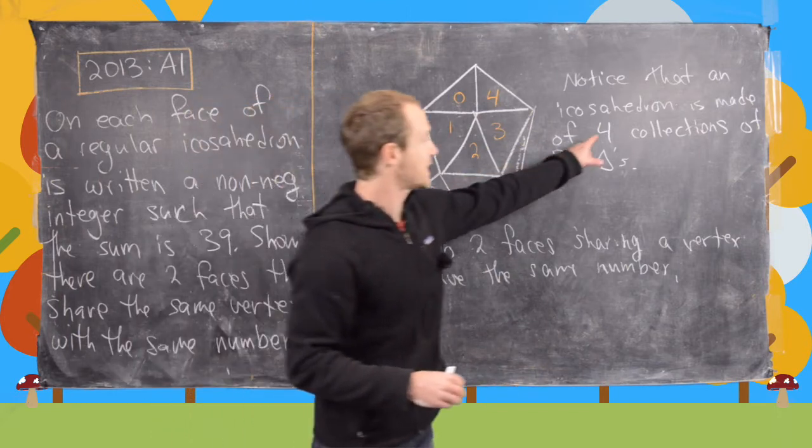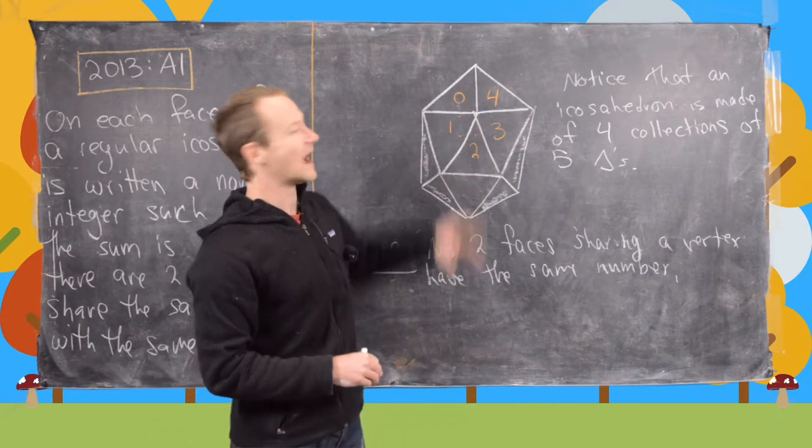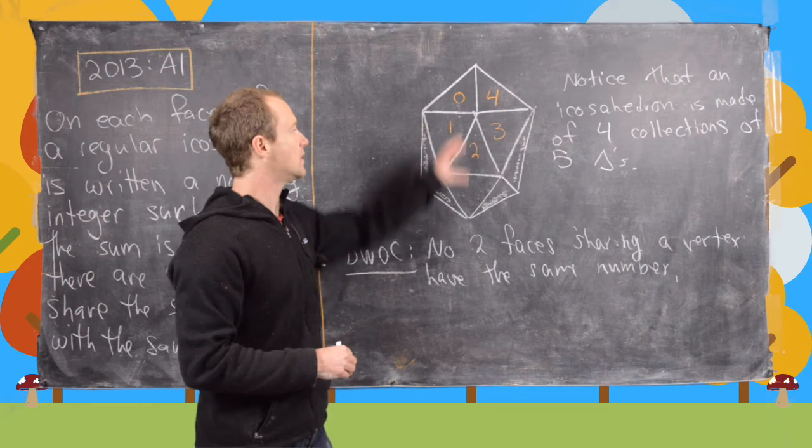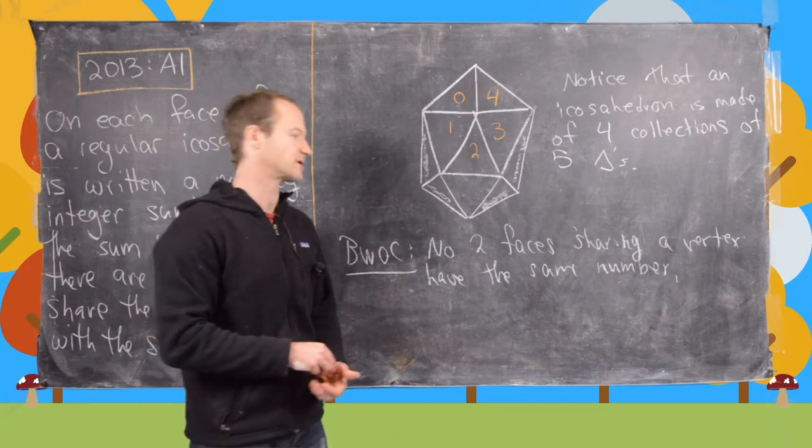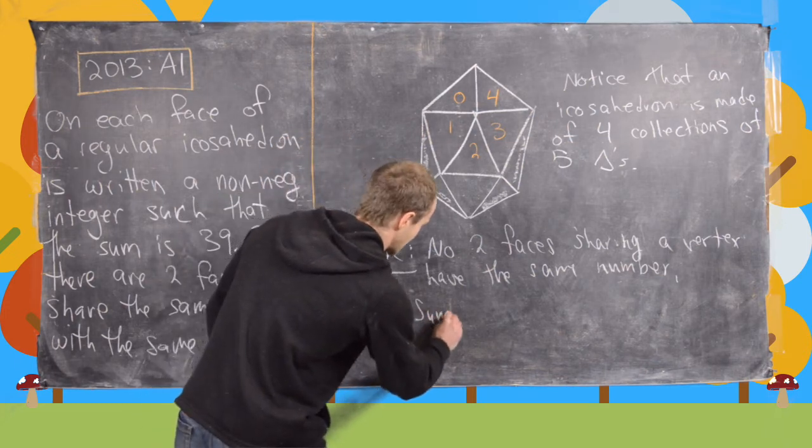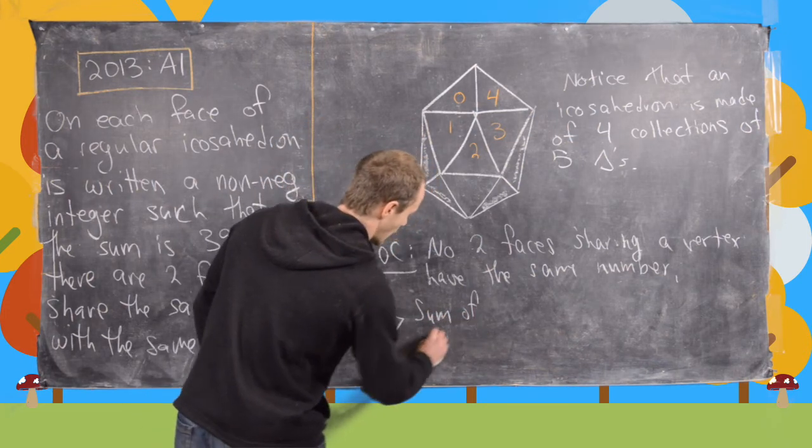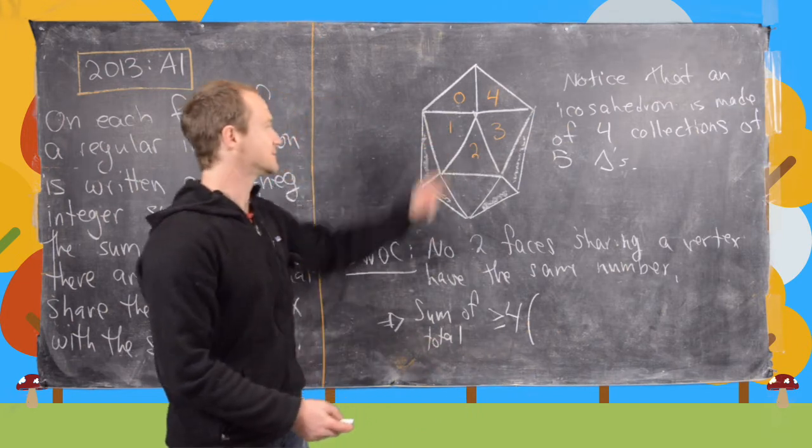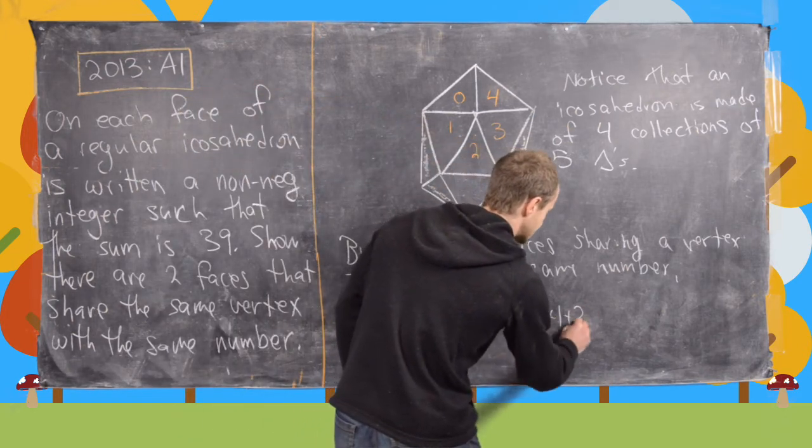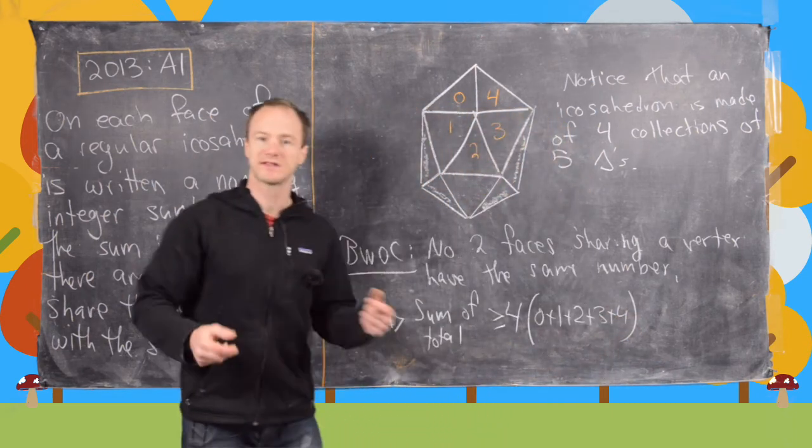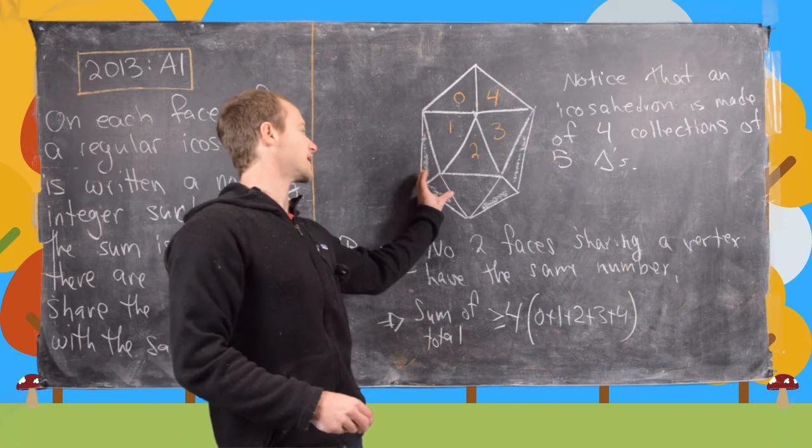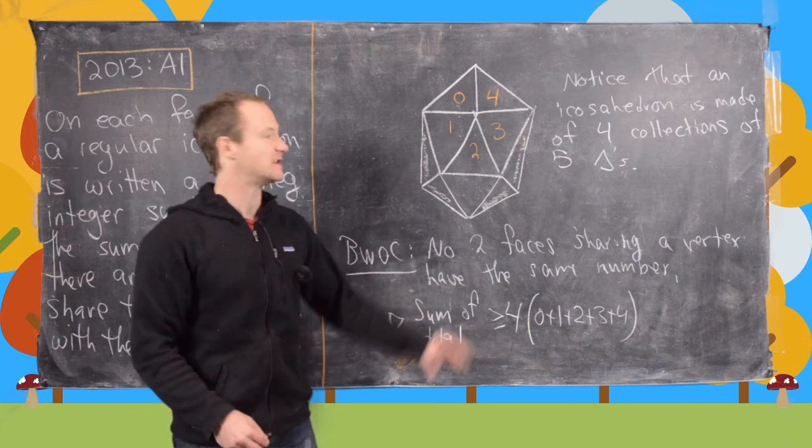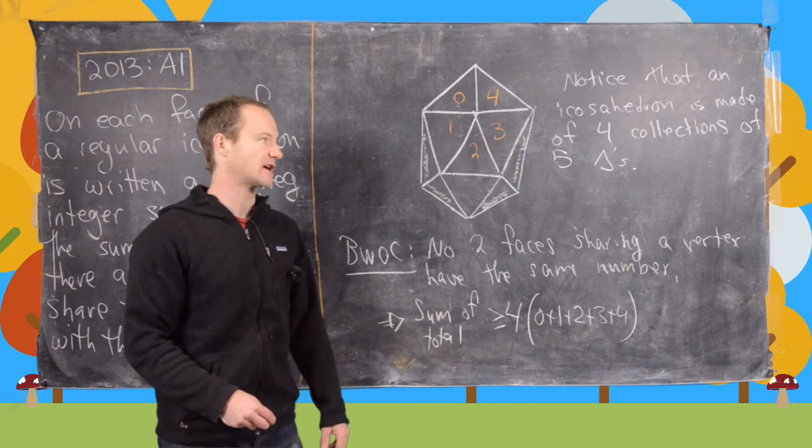And in fact, since we have four collections of five triangles like this, the smallest that we can make the sum of the total figure would be four times the sum of these numbers. So we have the sum total of the whole object has got to be bigger than or equal to four times zero plus one plus two plus three plus four. Now there's probably something more intricate going on, like with what's going on down here that would push the sum even higher. But at least the sum has to be this size just by looking at these four collections of five triangles.